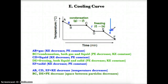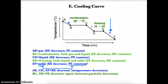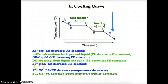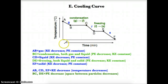EF, the third and final negative slope on any cooling curve, is a solid. Since it's only one phase, the potential energy is constant because the phase is not changing. The temperature is decreasing during this time, so kinetic energy must also be decreasing. In summary: the third and final negative slope is solid, potential energy is constant, and kinetic energy and temperature decrease.